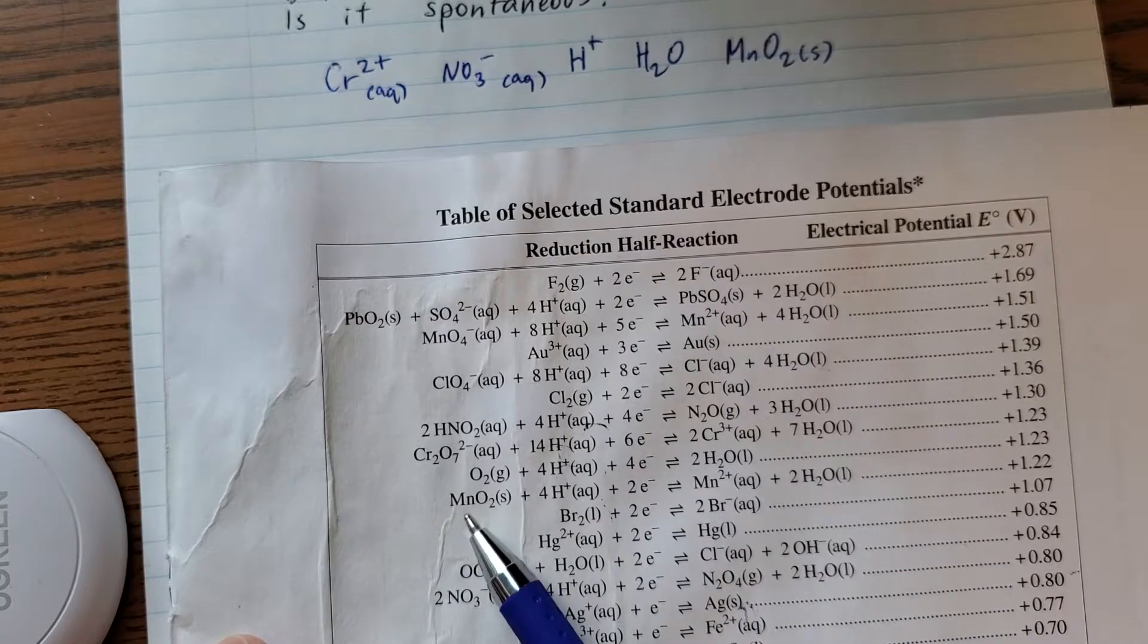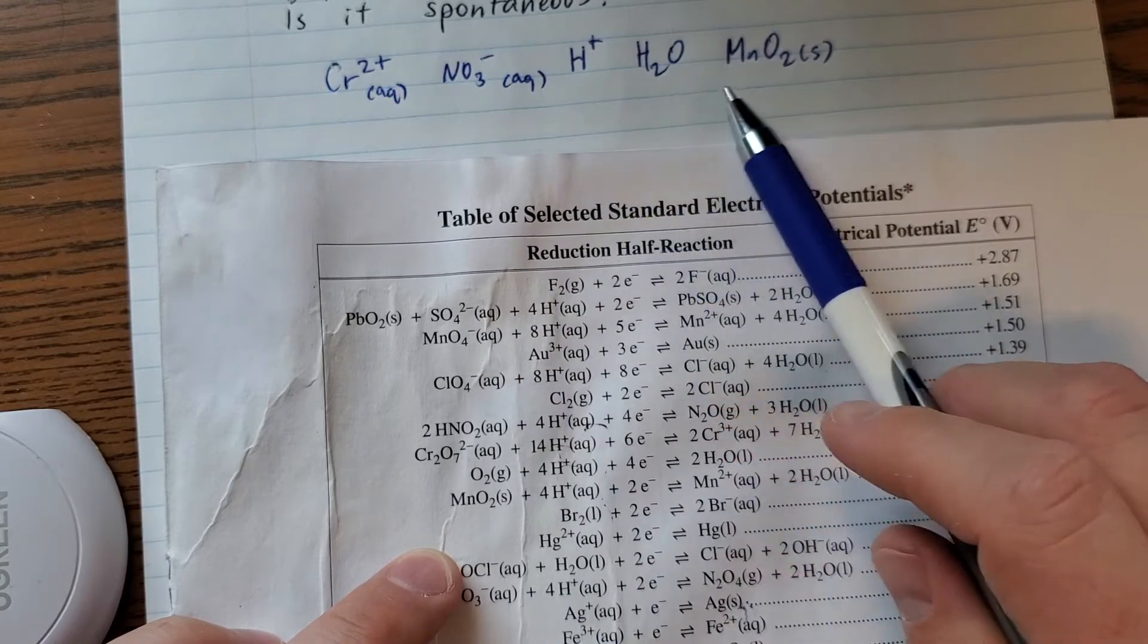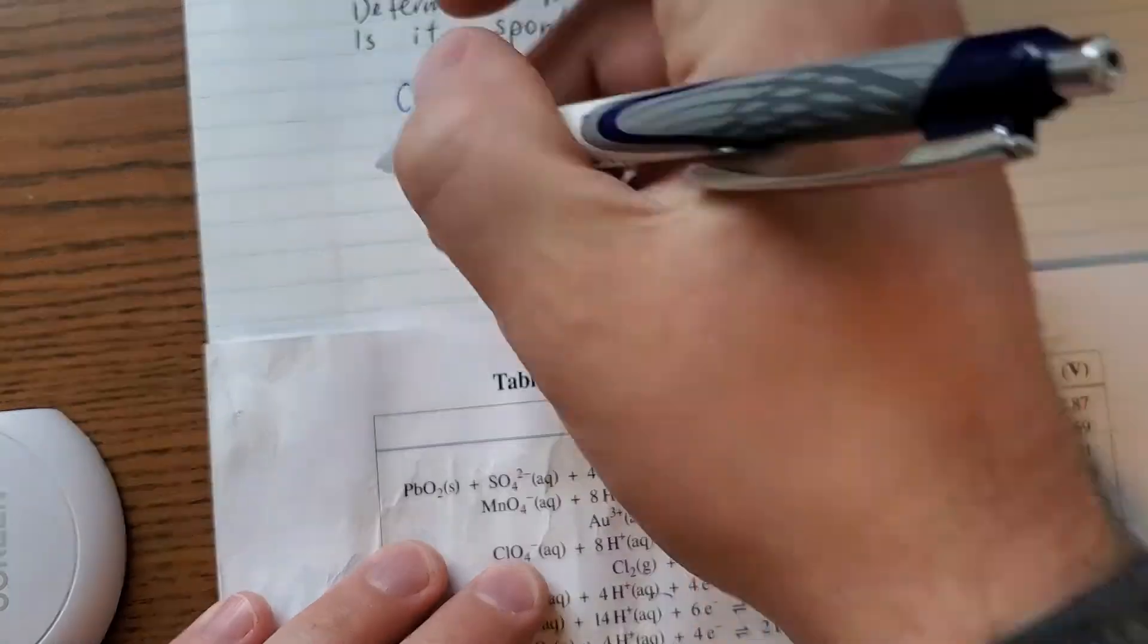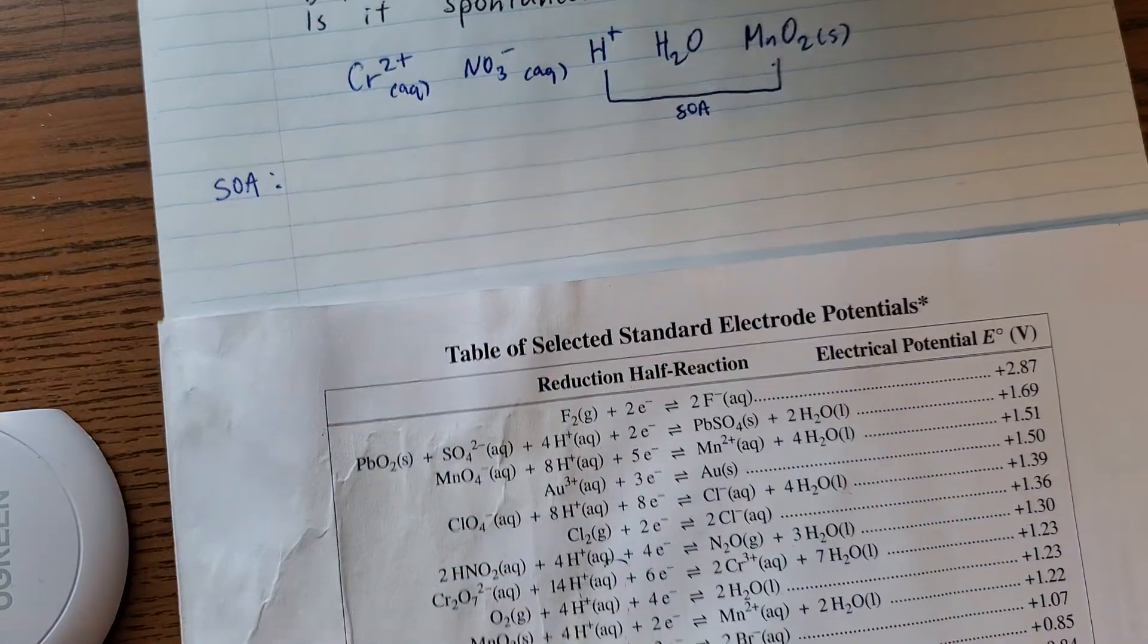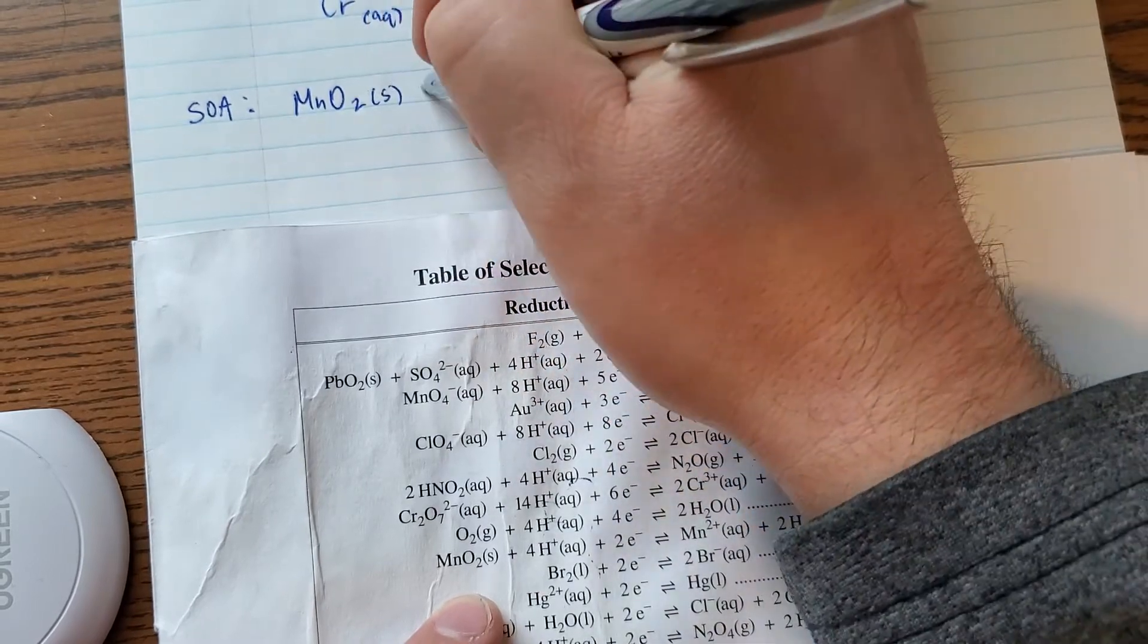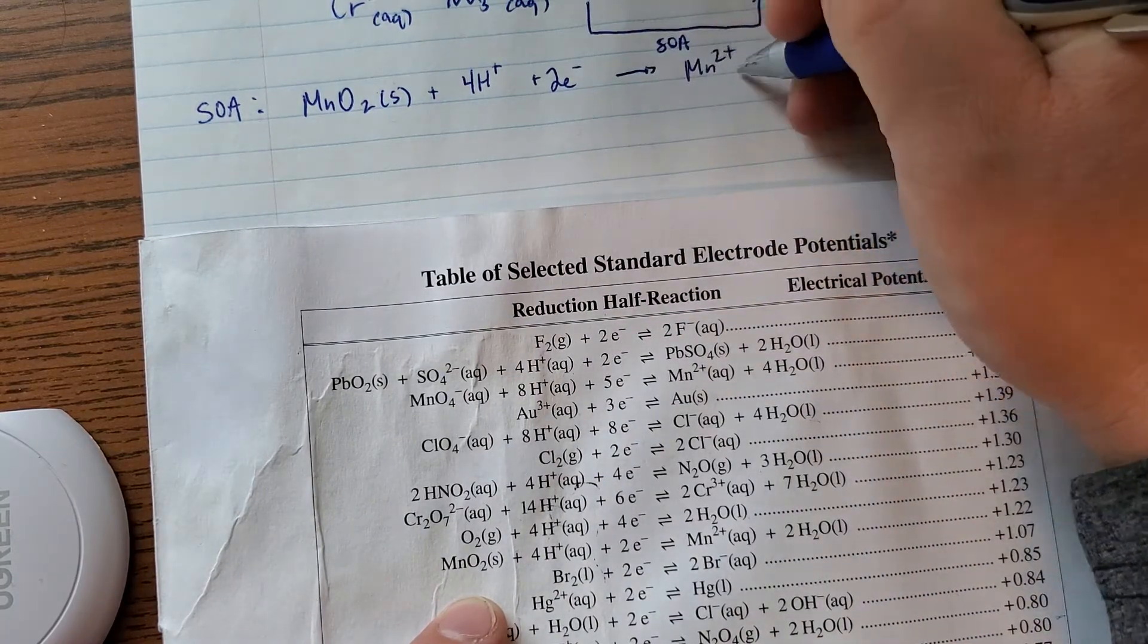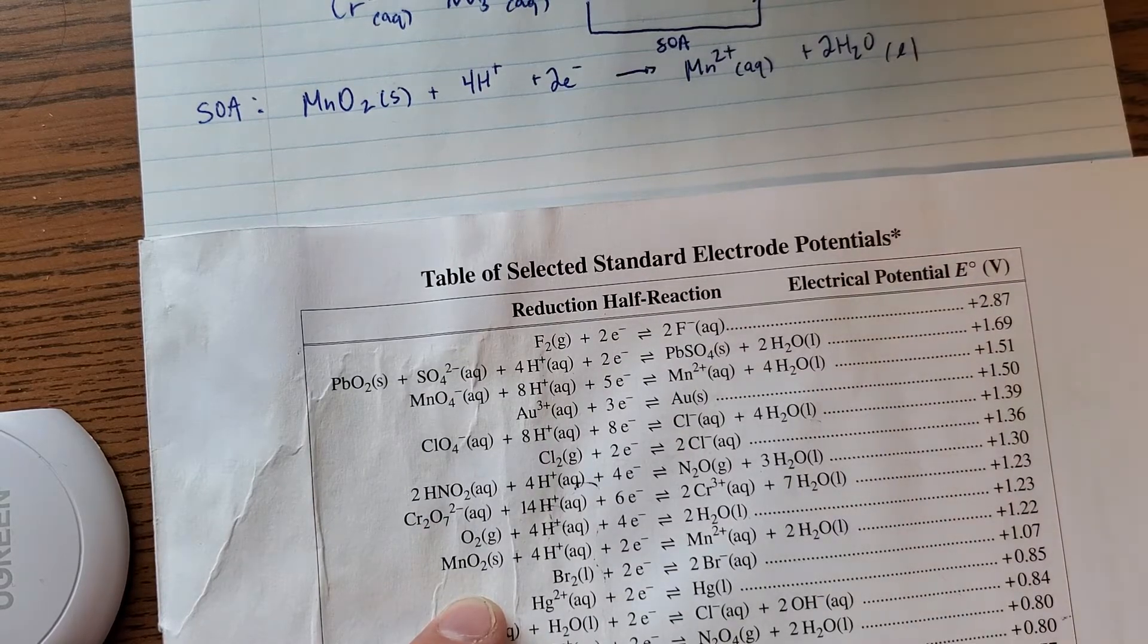I don't have this... whoa, I got MnO2. Do I have H+? I totally do. So here's my SOA, these guys together. These are my SOA, and I write that half reaction exactly like how it appears in my data booklet. So I'm just going to write it out. Looks good.